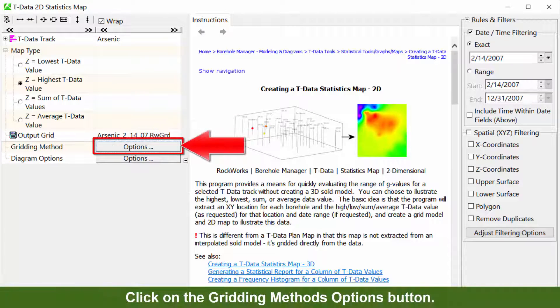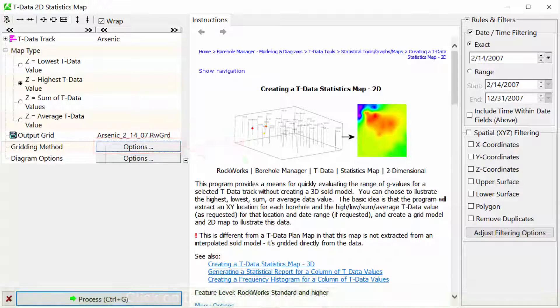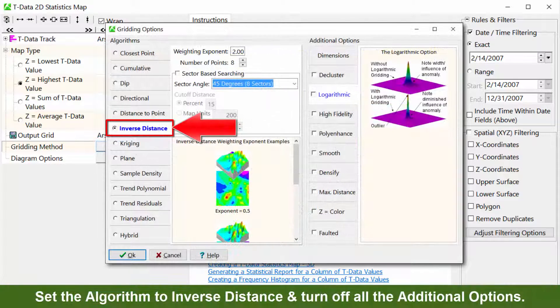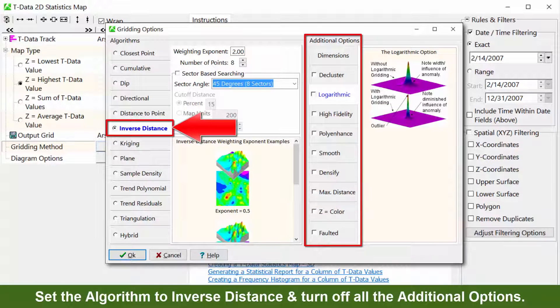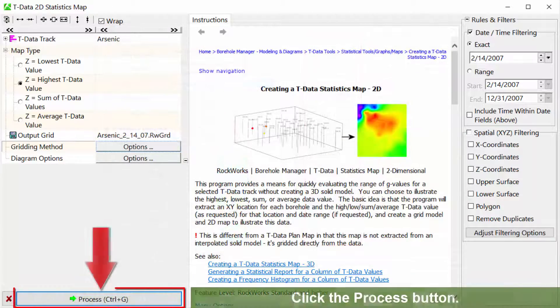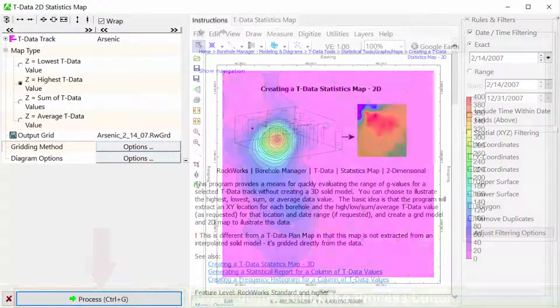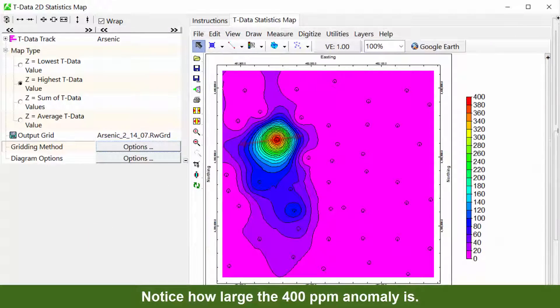Click on the Gridding Methods Options button. Set the algorithm to Inverse Distance and turn off all the additional options. Click the Process button. Notice how large the 400 ppm anomaly is.